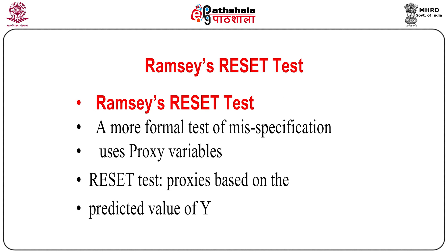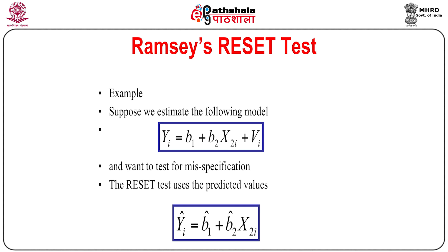We also have formal tests like Ramsey's Regression Specification Error Test, or Ramsey's RESET test. This is a formal test of misspecification that uses a proxy variable and is based on the predicted value of the dependent variable ŷ. For example, suppose we estimate y_i = β₁ + β₂x₂ᵢ + vᵢ and want to test for misspecification. The RESET test uses predicted values ŷᵢ = β̂₁ + β̂₂x₂ᵢ.